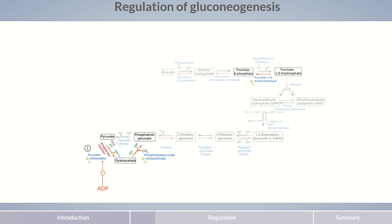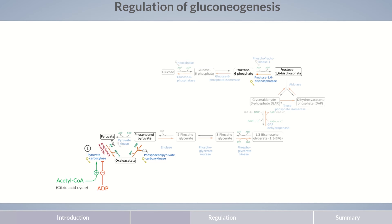In contrast, acetyl-CoA stimulates pyruvate carboxylase. In fact, this activation isn't directly related to gluconeogenesis. The oxaloacetate produced by pyruvate carboxylase isn't only used in gluconeogenesis, but also serves as a molecular carrier in the citric acid cycle. Acetyl-CoA is the main substrate of the citric acid cycle and accumulates if there's not enough oxaloacetate. So the activation of pyruvate carboxylase by acetyl-CoA is intended to facilitate the citric acid cycle rather than gluconeogenesis.